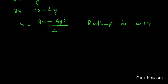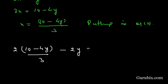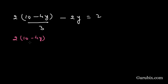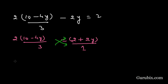Equation number 2 is 2x - 2y = 2. Substituting x = (10 - 4y)/3, we get 2(10 - 4y)/3 - 2y = 2. Taking -2y to the right-hand side gives 2(10 - 4y)/3 = 2 + 2y. We shall now cross multiply.